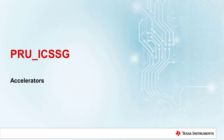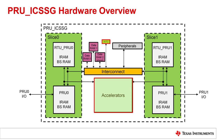Welcome to the PRU ICSSG Accelerators Training Module. During this module, we will be discussing the accelerators that are available within the PRU ICSSG, starting with an overview of how the PRU ICSSG cores communicate with the accelerators, and then talking about the basic functionality of each accelerator. The PRU ICSSG accelerators are divided into two categories: data processing accelerators and data movement accelerators.